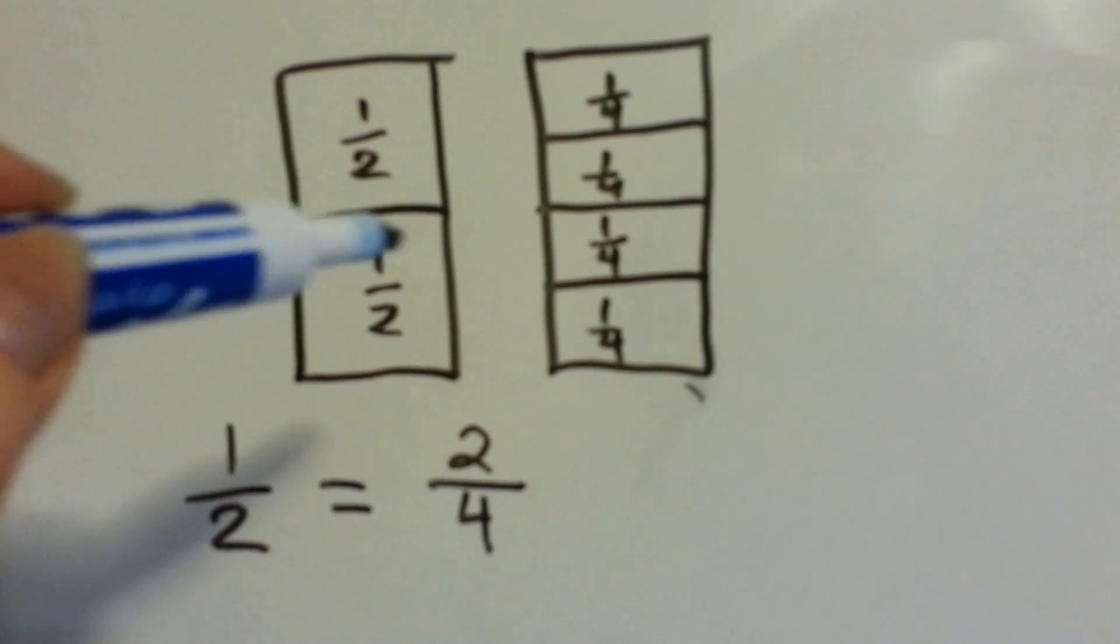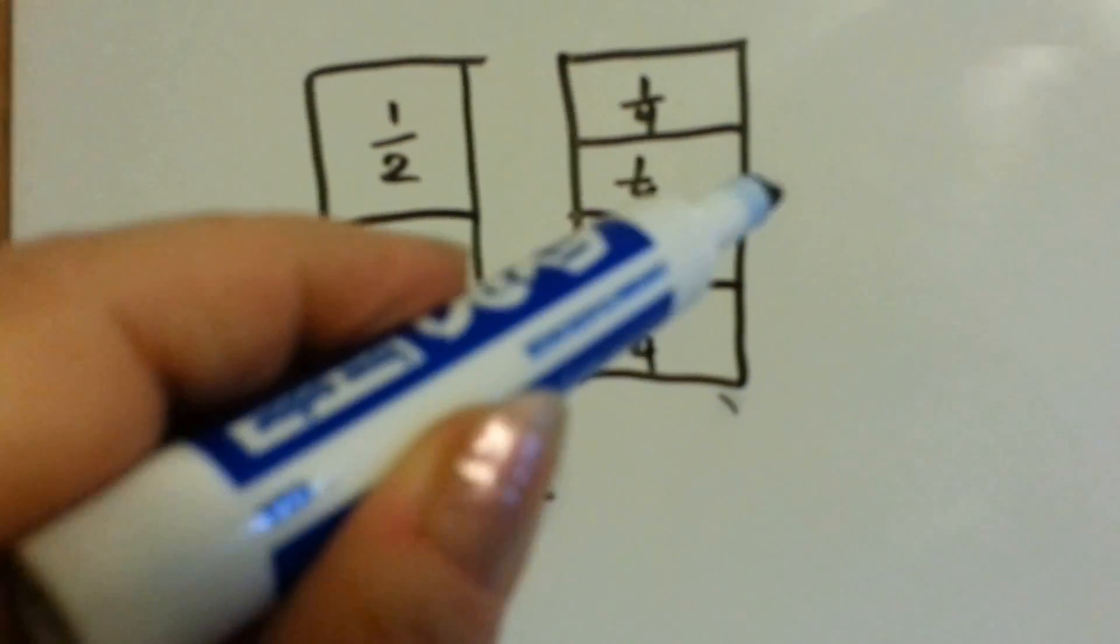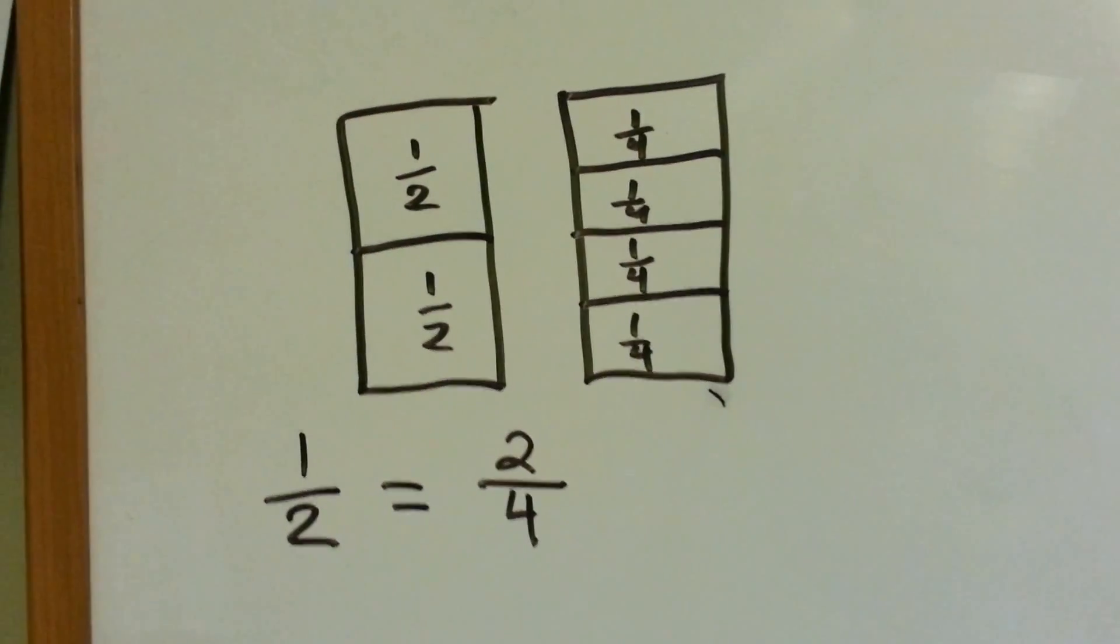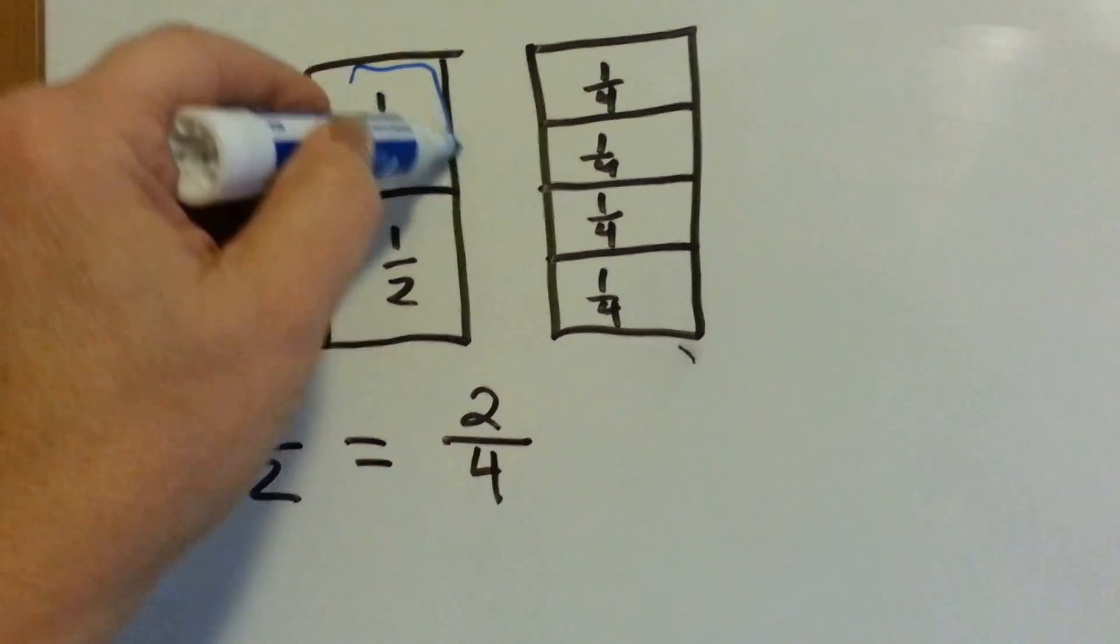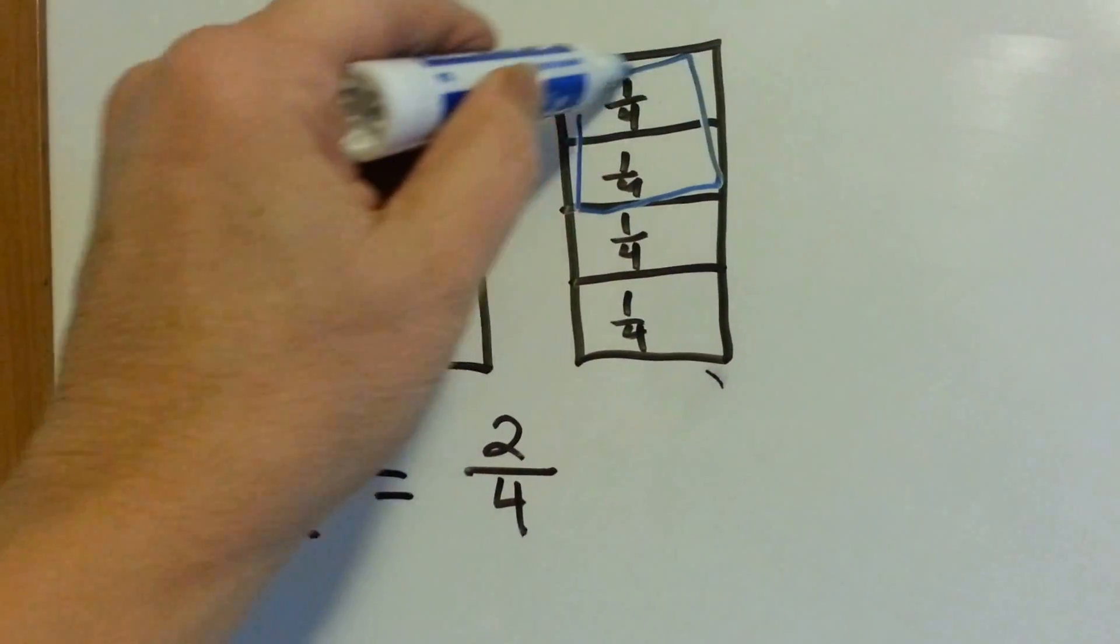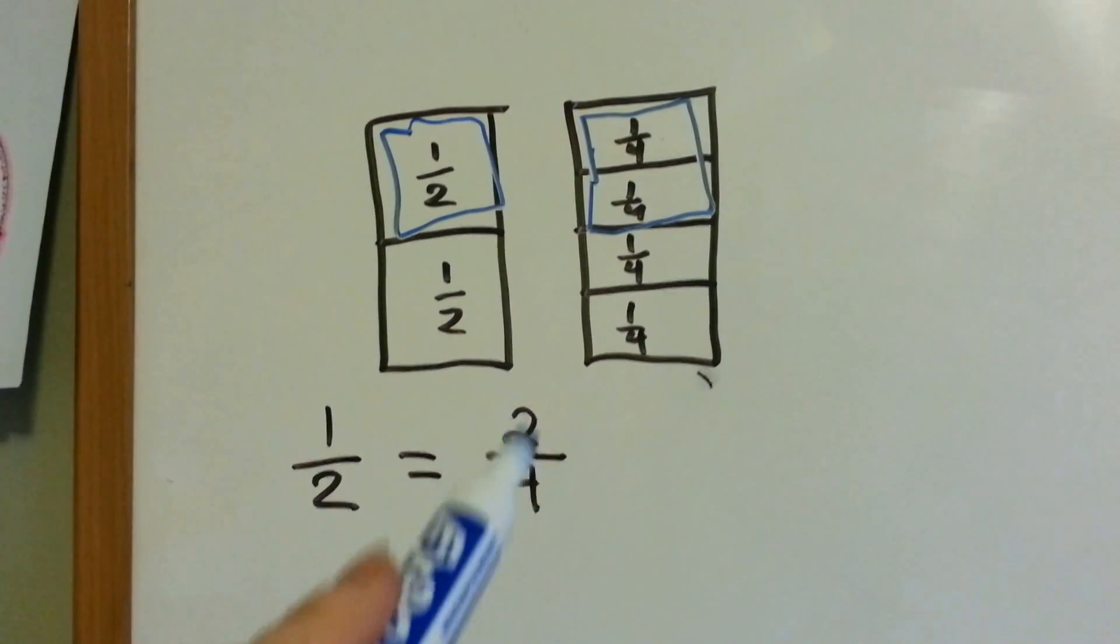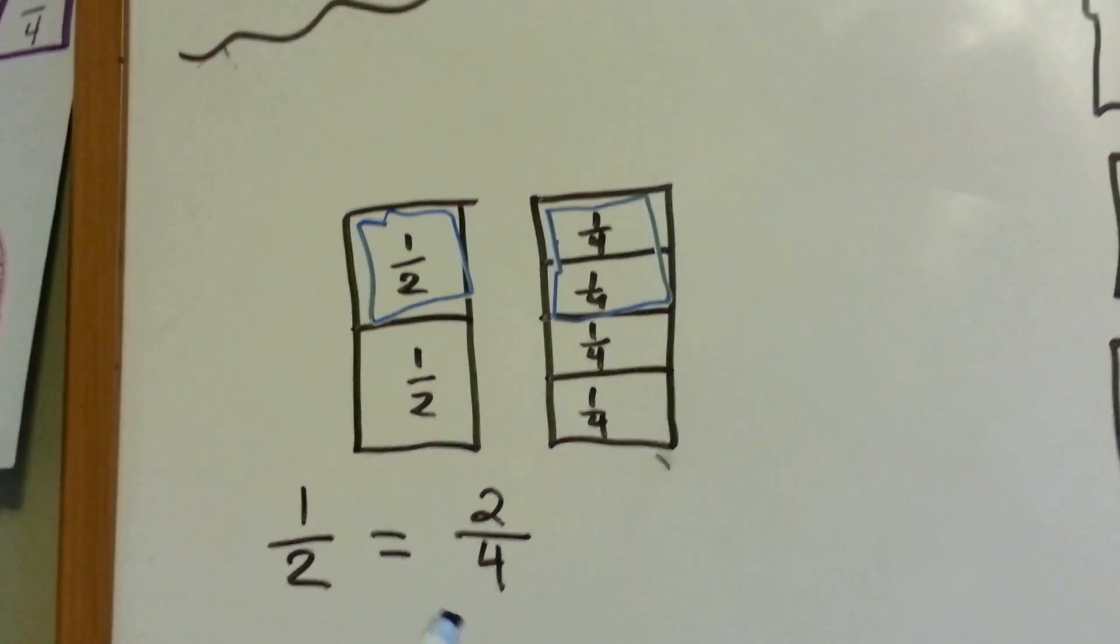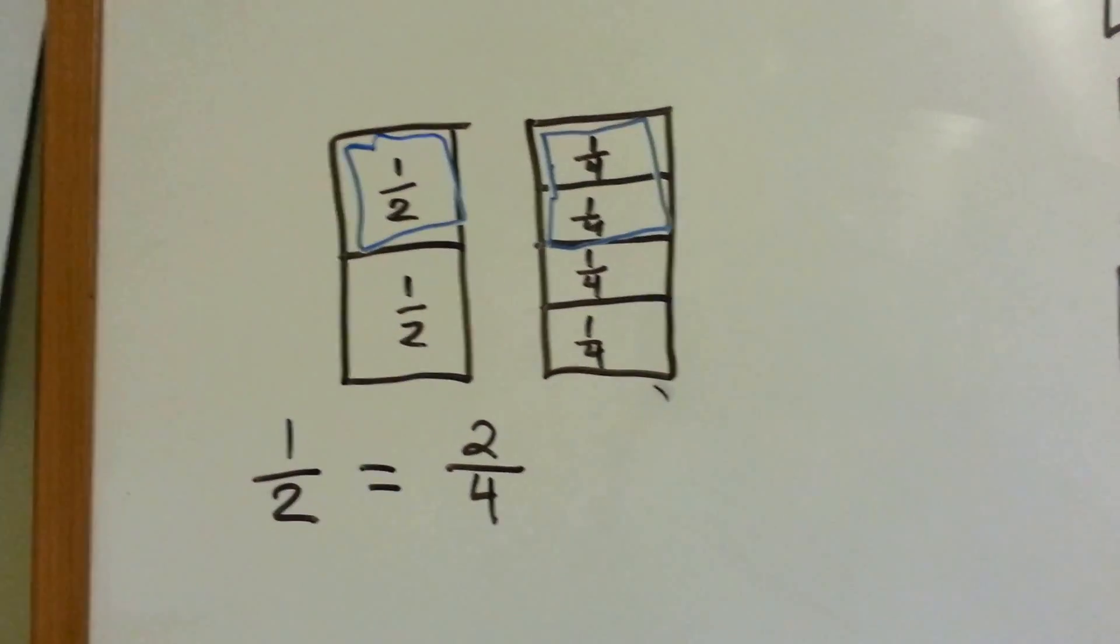This box is split in half, right here. And this box, which is basically the same side, is split into fourths. This half up here is just as big as two fourths. One half is equal to two fourths, and they're equivalent fractions. They equal the same.